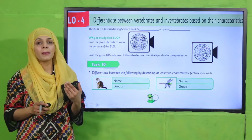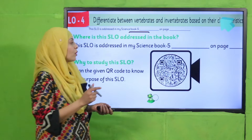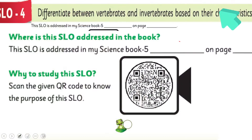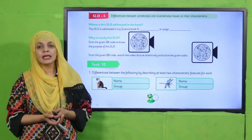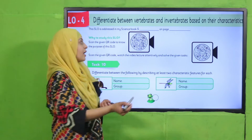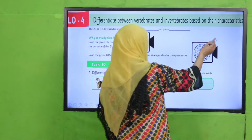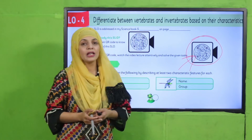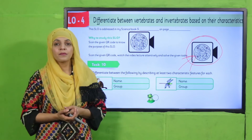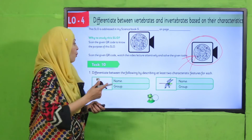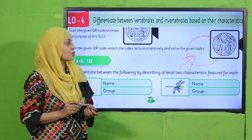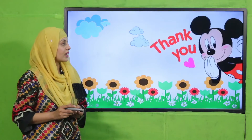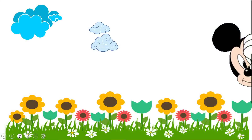SLO ko dobara padhen, phir dhundhein ke yeh aapki Science 5 ki book mein concept page number pe diya gaya hai. Then write down the name of your book and page number here in the blanks. Next, isi SLO ke saath jo second QR code diya gaya hai usko scan karein — scan karne par video milegi, usko zaroor dekhen, and then you will be able to complete the homework given with this SLO. Complete your homework in time. Thank you so much, and Allah Hafiz.